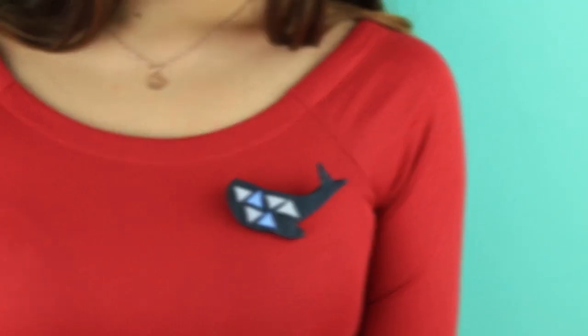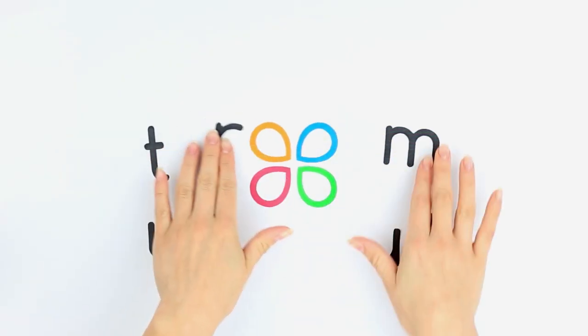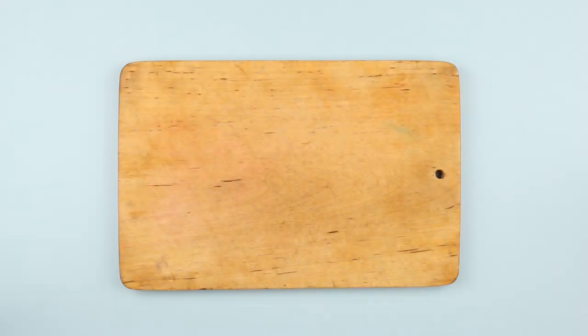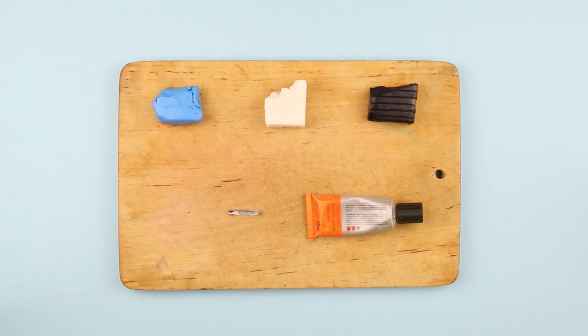In this tutorial we'll make a whale shaped brooch in polymer clay. We'll need polymer clay of different colors: black, white, and blue, a brooch pin back, and multi-purpose glue.